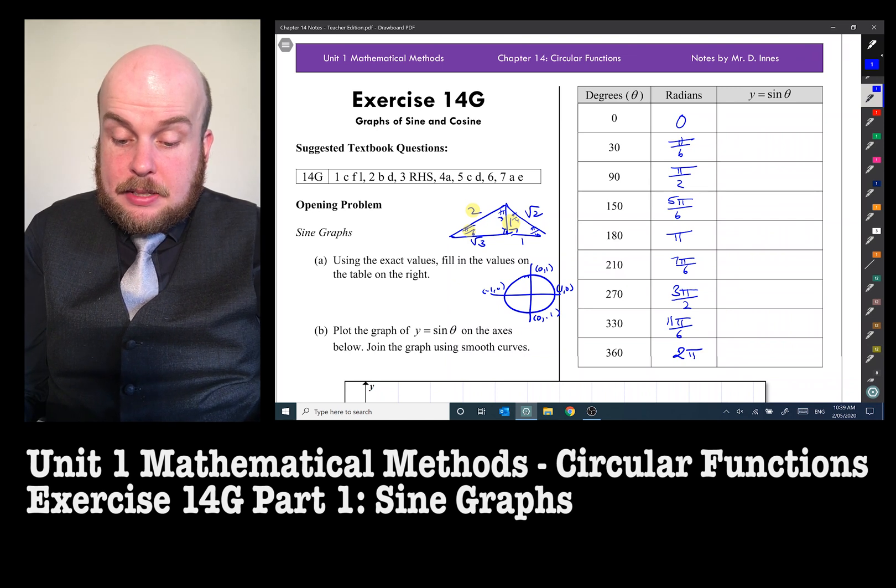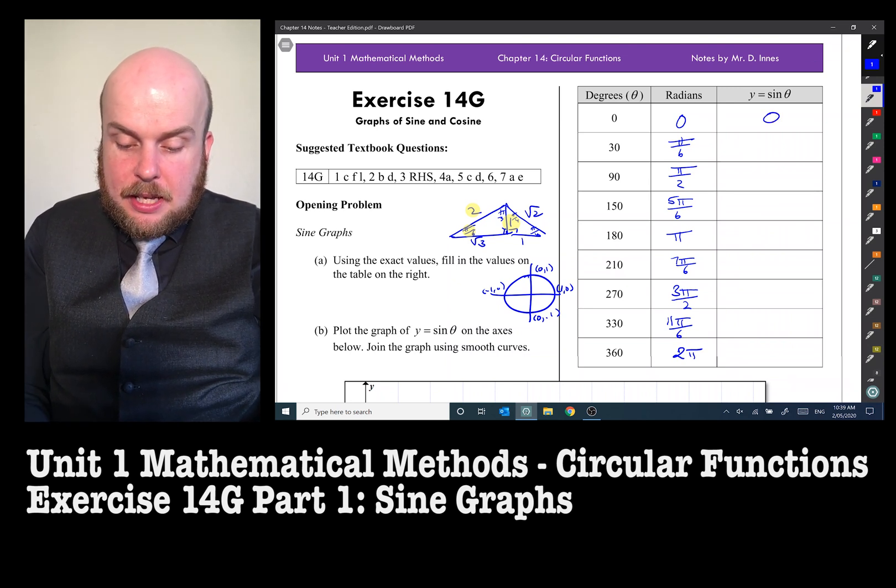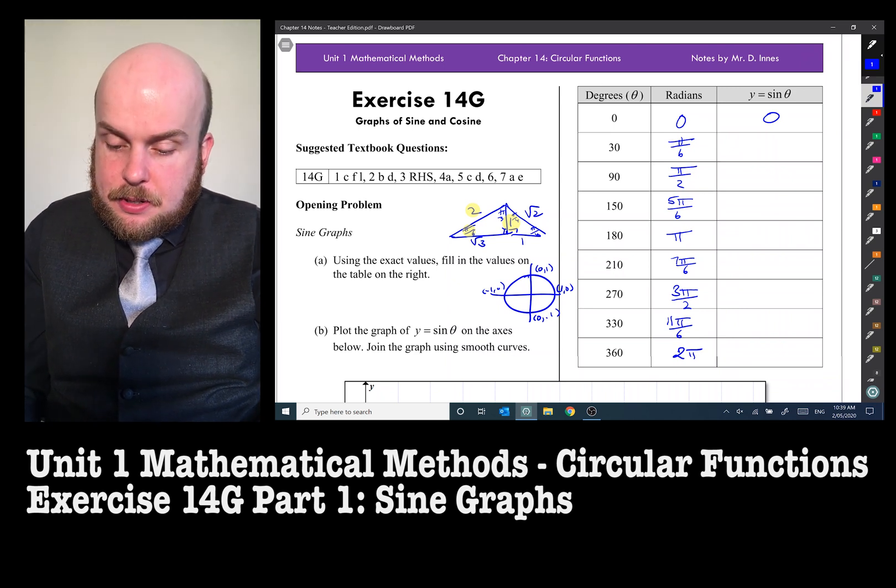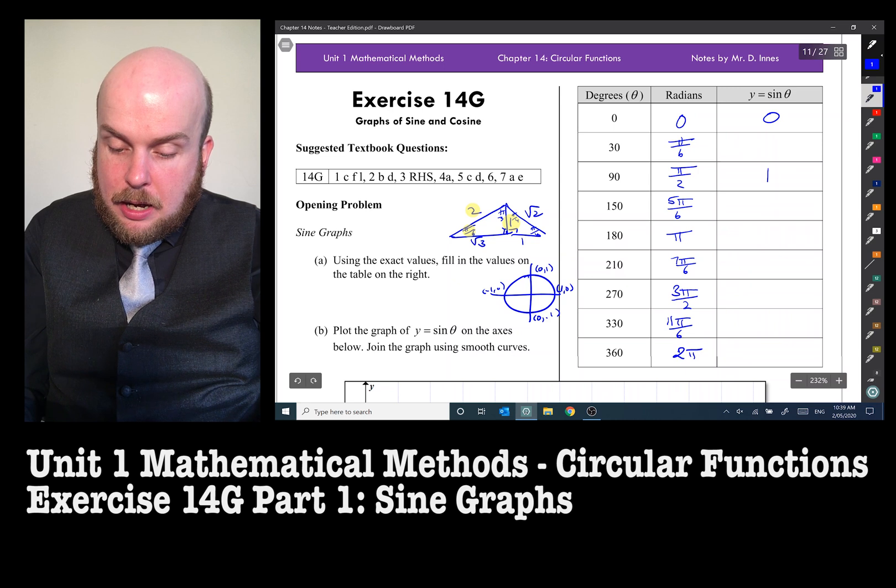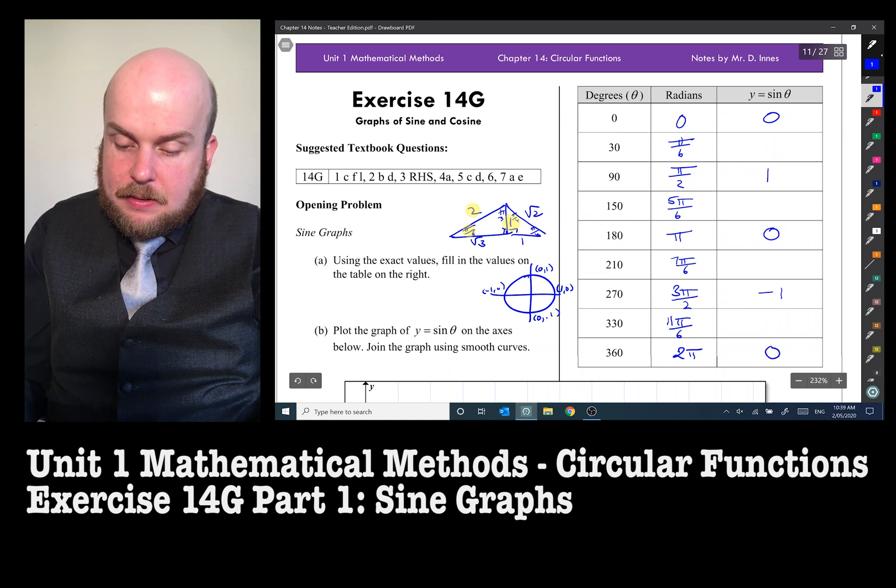Sine 0 is going to be 0. I may as well do the unit circle ones. Sine of 90 degrees or pi on 2 is going to be 1. And then it becomes 0 again at 180, and then it becomes negative 1 and then back to 0.